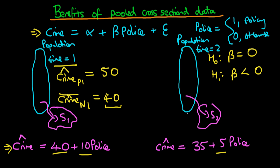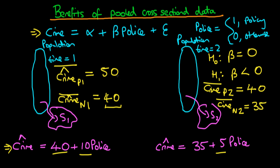We do the same thing at time period 2, estimating the average crime rate for those cities which did introduce the policy at time period 2 — giving this policy some time to have an effect. From this model, the average crime rate is going to be 40, whereas for those cities which didn't introduce the policing policy at time period 2, it is going to be 35. So the gap between those that did and didn't introduce the policy was 10 at time period 1, whereas at time period 2 this gap has lowered to 5.